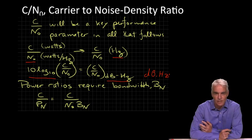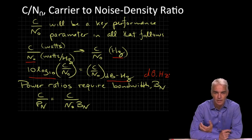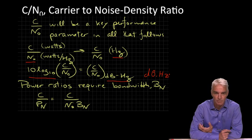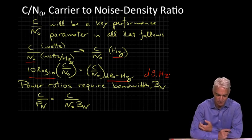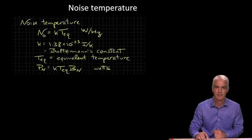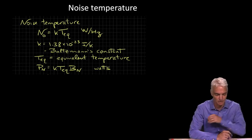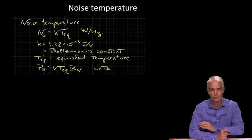That's a density ratio. If we want to look at the carrier-to-noise ratio for a signal that is passed through a filter, we have to look at the bandwidth of that filter and multiply that noise density by the bandwidth to see how much noise power there is in total. To get a power ratio, we multiply N₀ by Bₙ as shown. So that's the definition of the noise density and the carrier-to-noise density ratio.